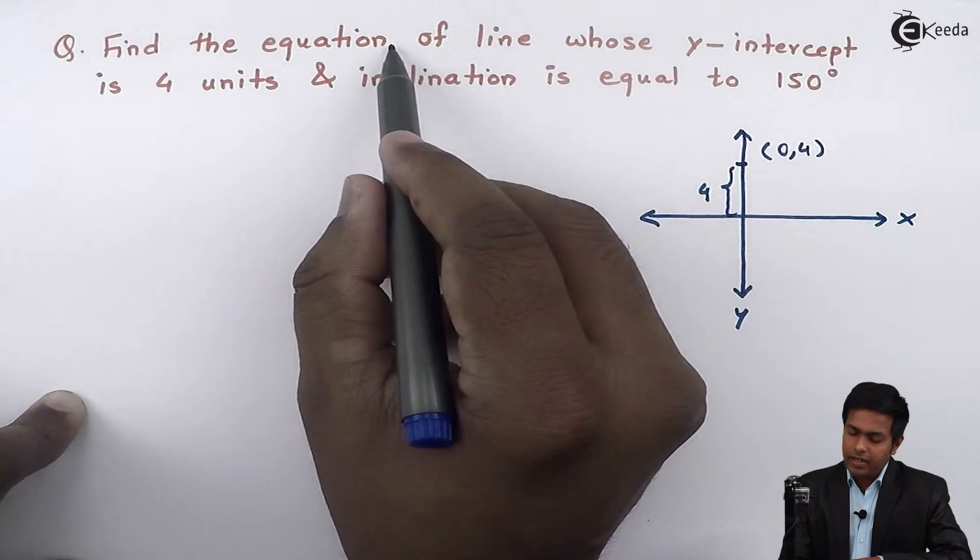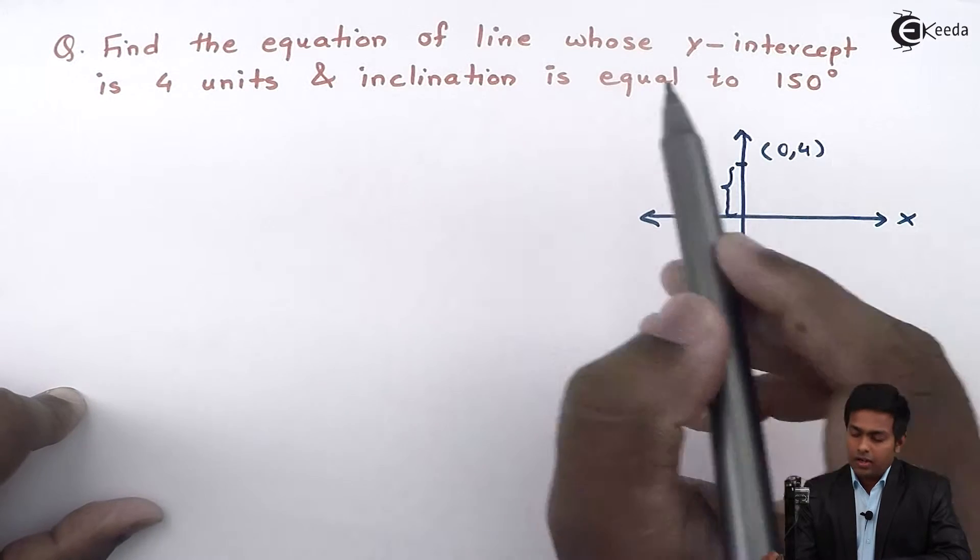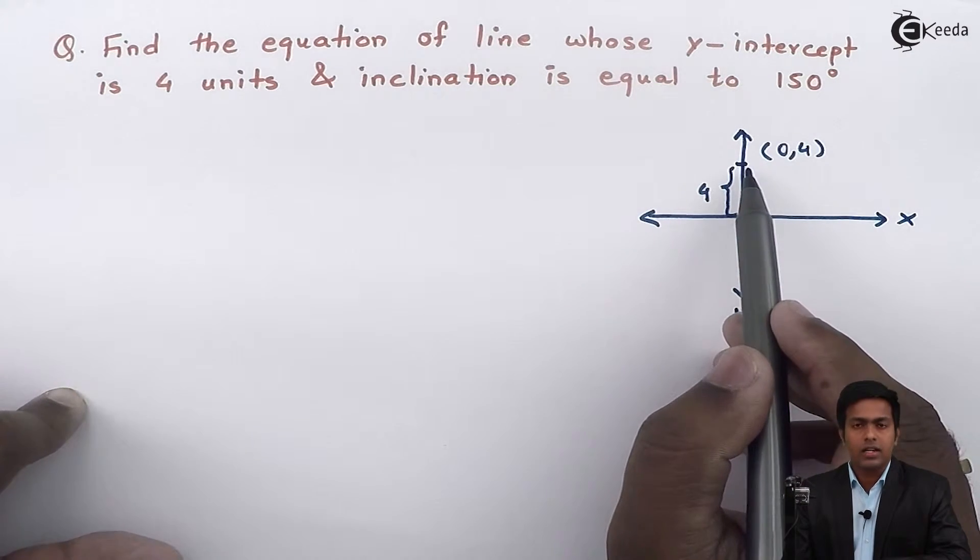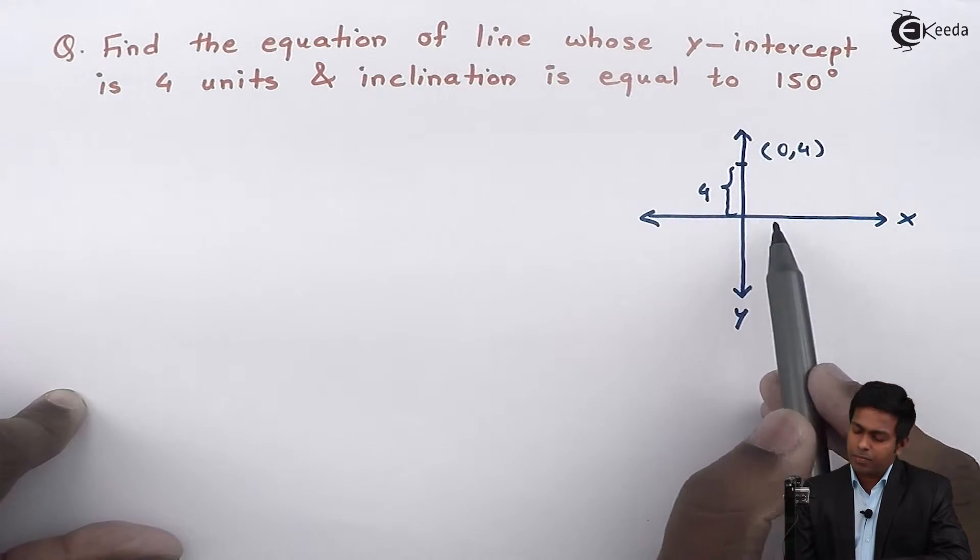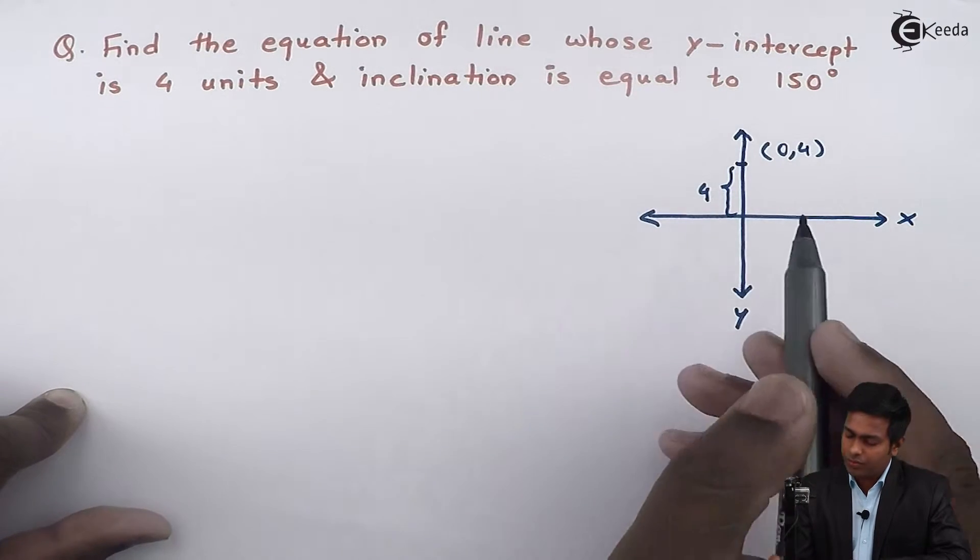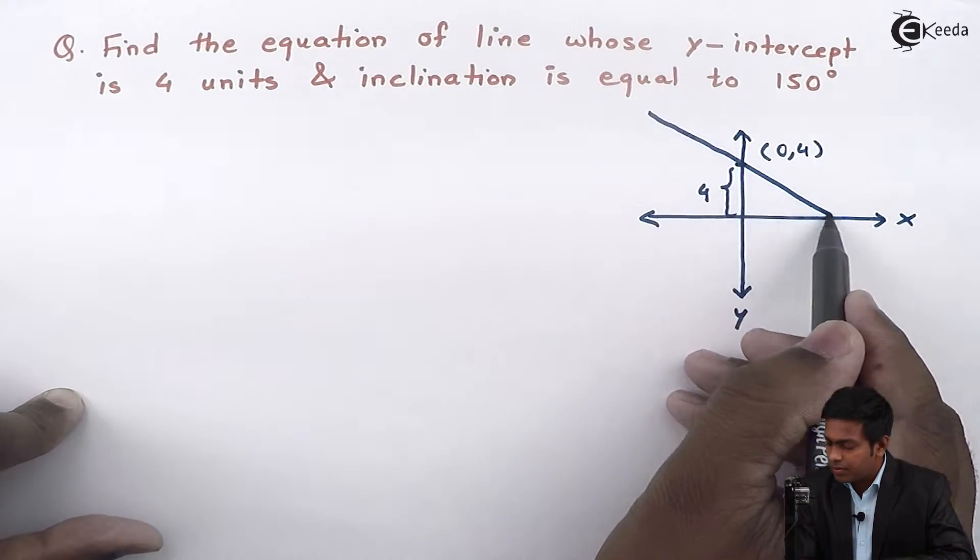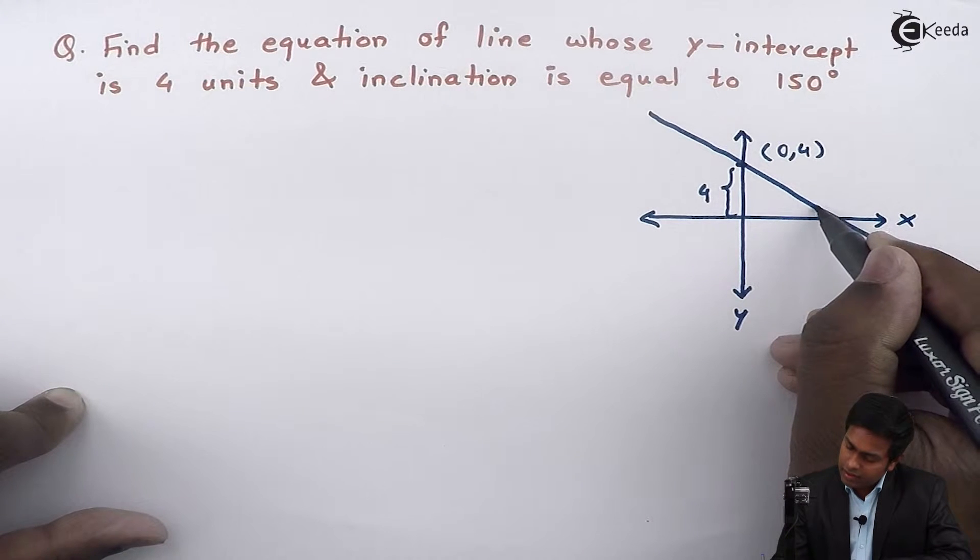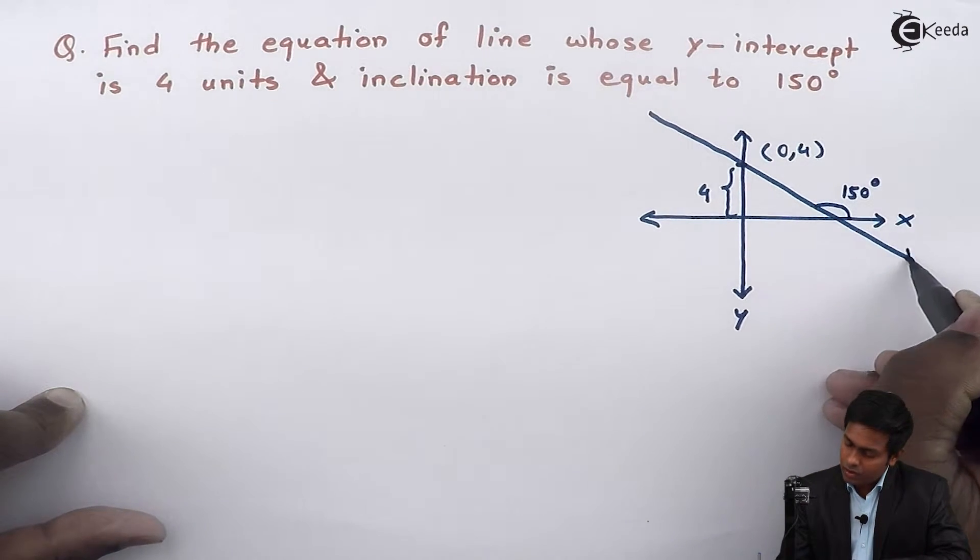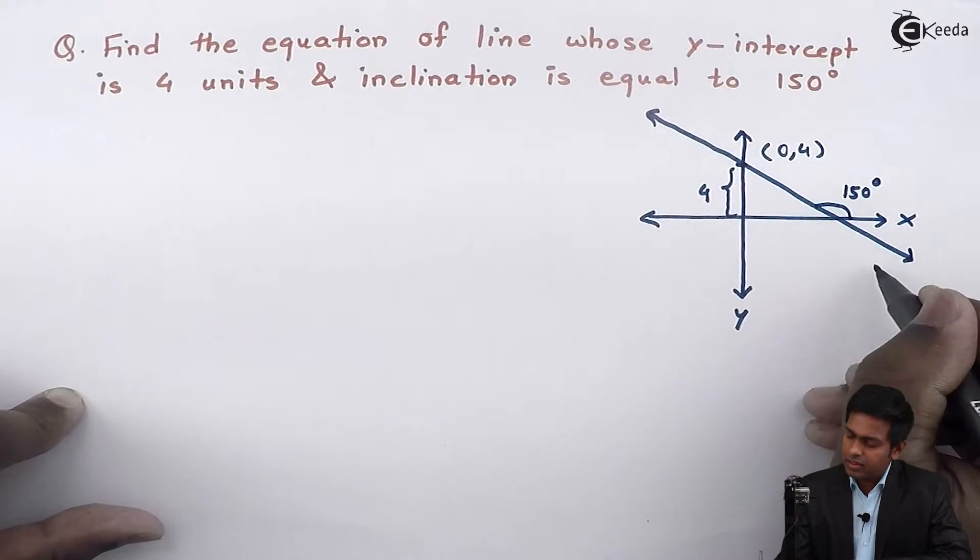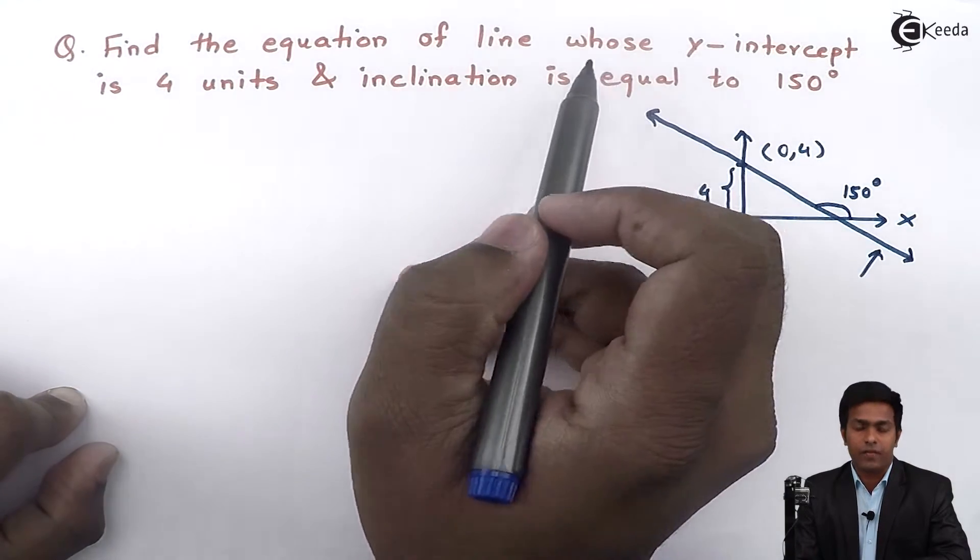Now our line having y-intercept 4 units and inclination as 150 degrees. So this inclination is nothing but the angle made with positive direction of x-axis. So if I'm saying it is 150 degrees, it would go like this. If we'll see here, the angle is 150 degrees. So this is the line for which we want the equation.